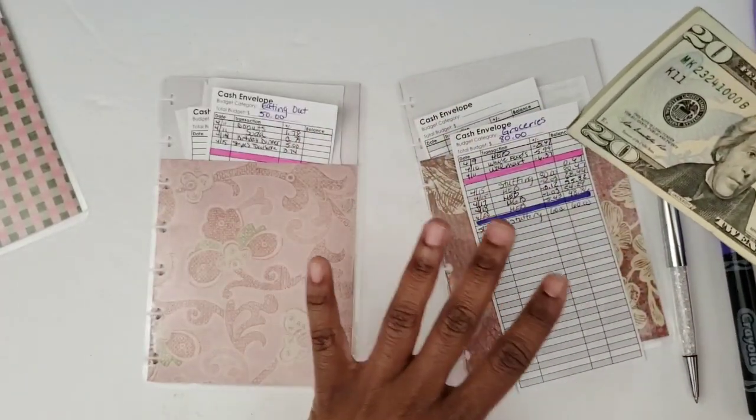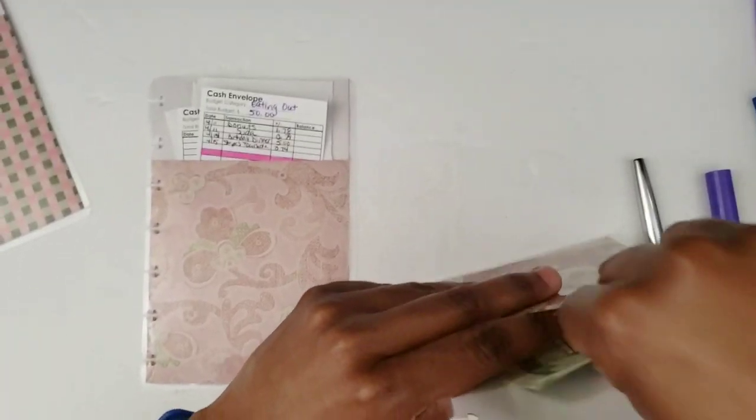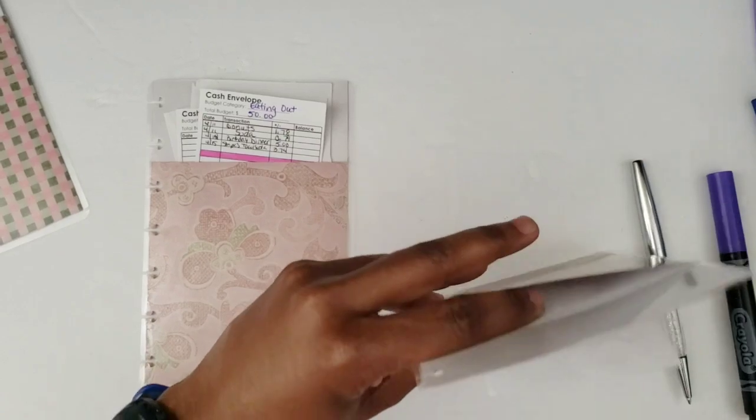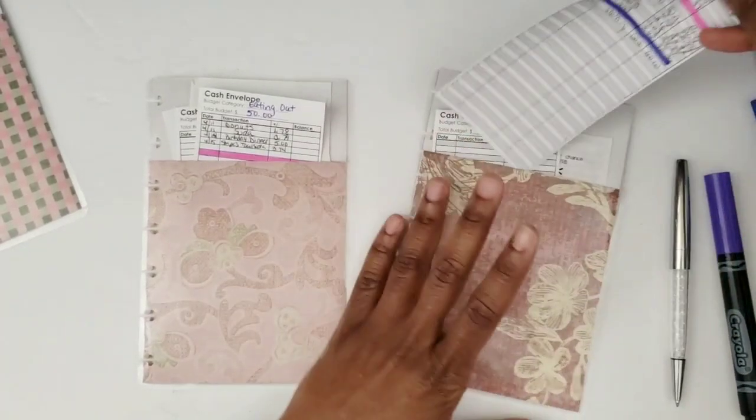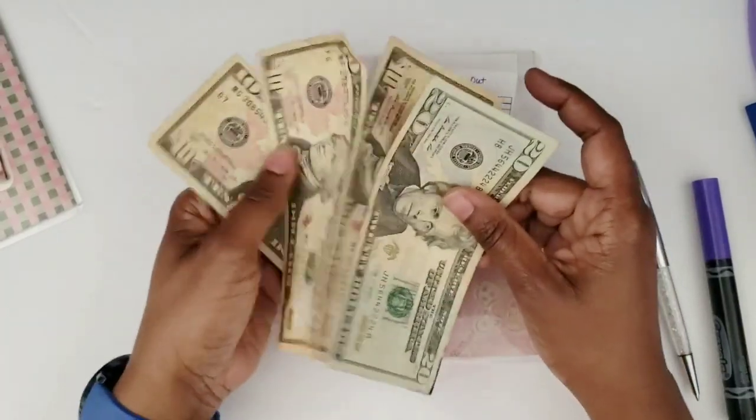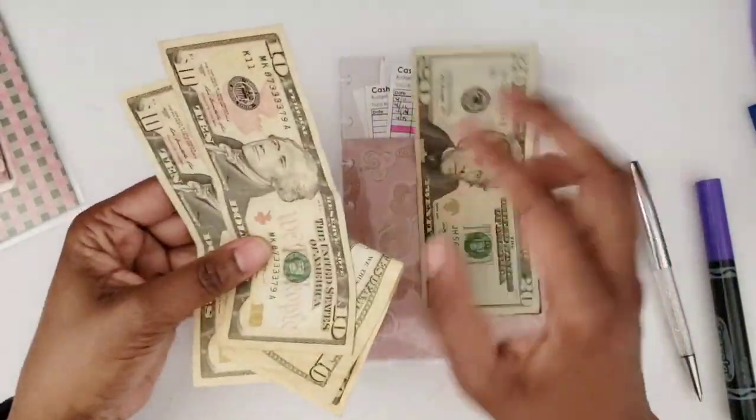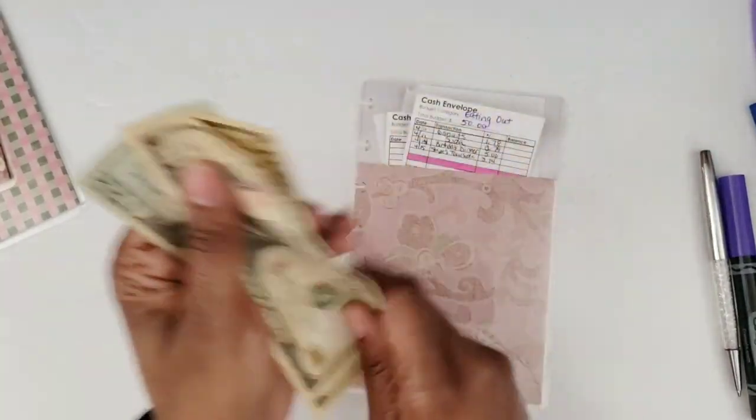Oh sorry, this is the wrong one. This is groceries, I'm sorry. Yeah, groceries I spent twenty dollars already, I think. Did I just say gas? I don't know. This is grocery, so I spent twenty dollars already so I'm going to put in sixty, and then eating out is usually fifty, so twenty, thirty, forty, fifty dollars.